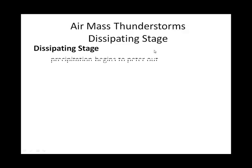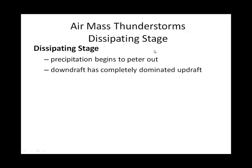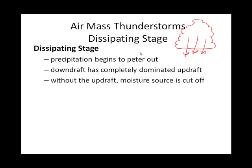Then we get to the dissipating stage. In the dissipating stage, we lose our updraft, and we'll probably see the edges start to become less and less organized, less crisp. We don't have an updraft — all we have is a downdraft. Basically, it's not getting any more moist air fed into it, and so this is the beginning of the end.